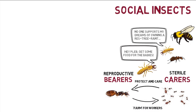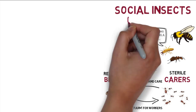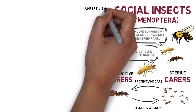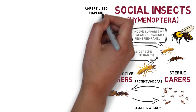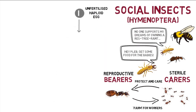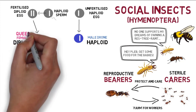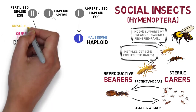Social insects such as ants, bees, and wasps are known as Hymenoptera, where haploid unfertilized eggs or homozygotic fertilized eggs from inbreeding develop into male drones, and diploid eggs develop into females. Females can develop into workers or queens depending on how they are raised and the food they receive.